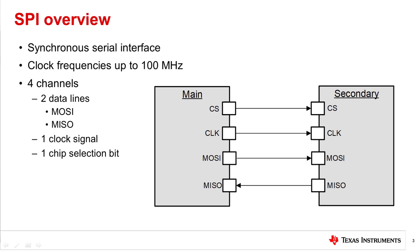In SPI, typically one main controller is used to communicate with one or more secondary devices. This figure shows a four-lane, one-to-one, main-to-secondary configuration. Configurations with multiple main devices are also possible. SPI devices are push-pull drivers rather than open-drain, so no external pull-up resistors are needed on IO lines.